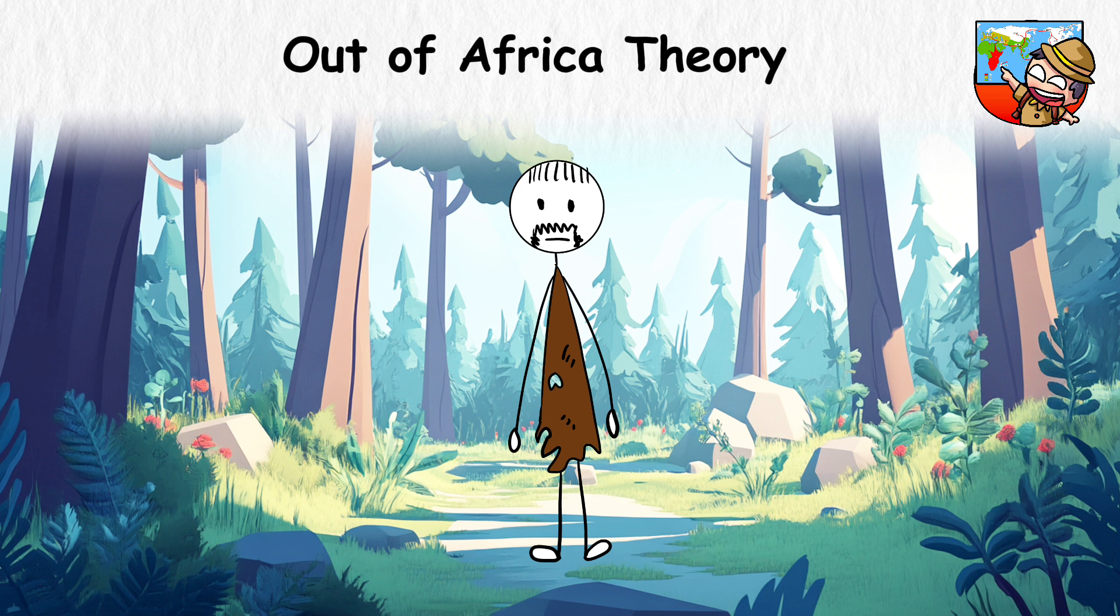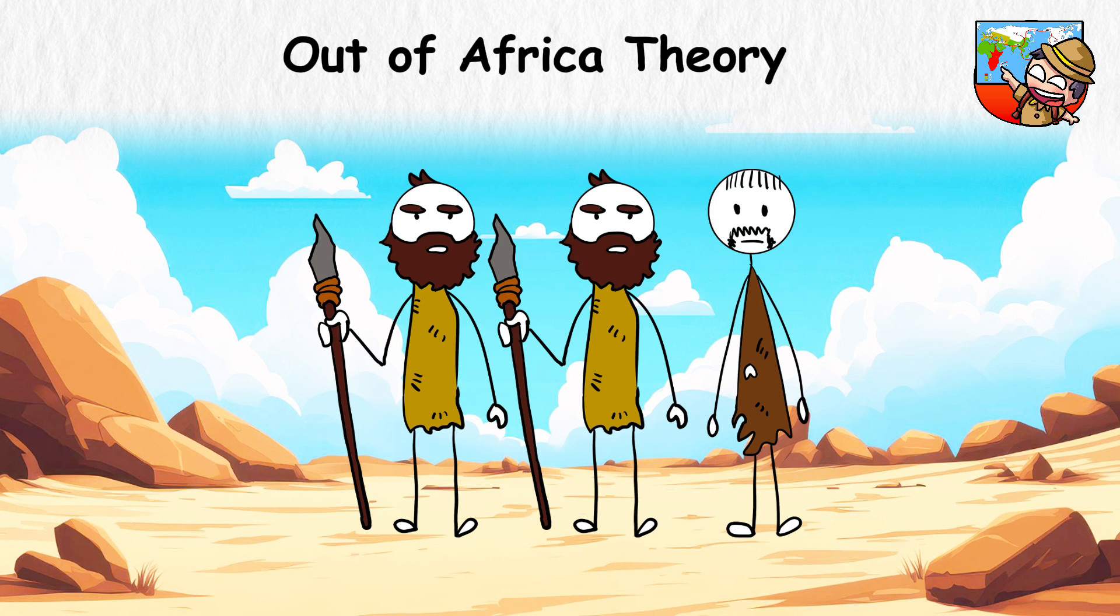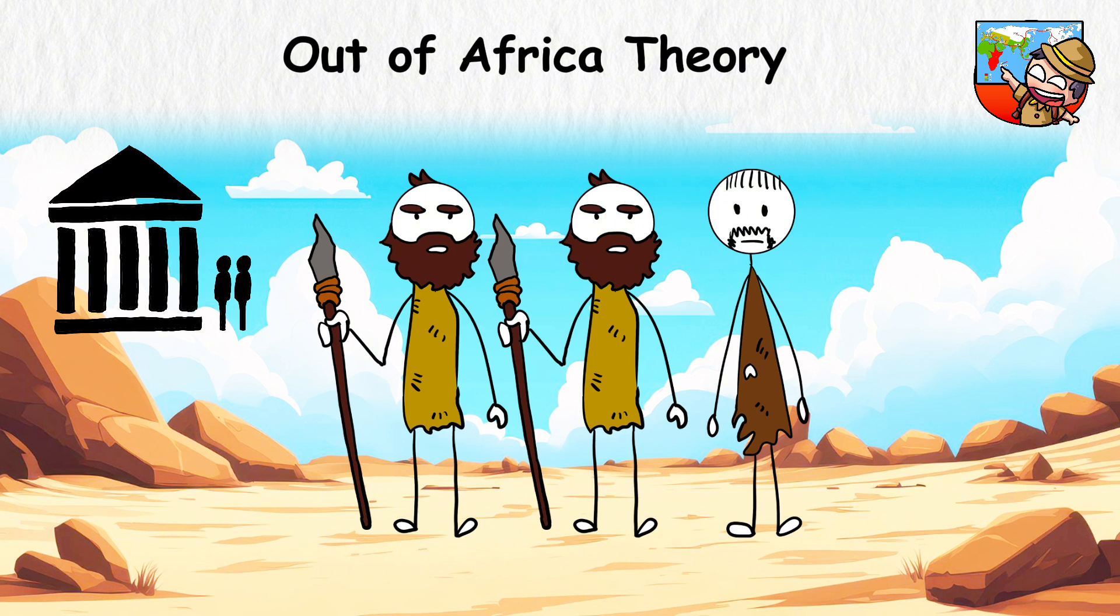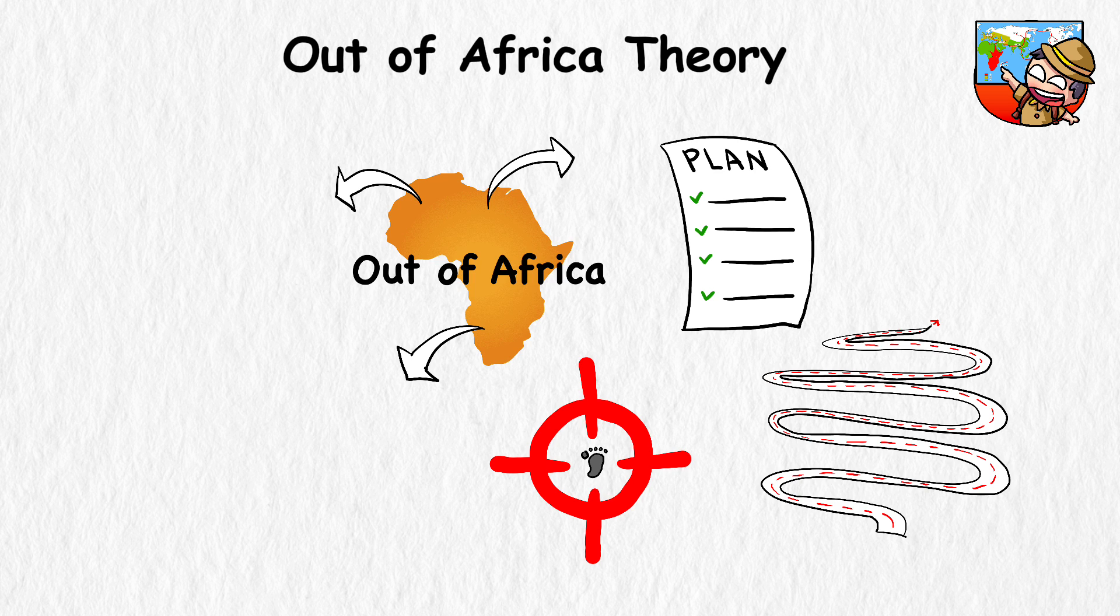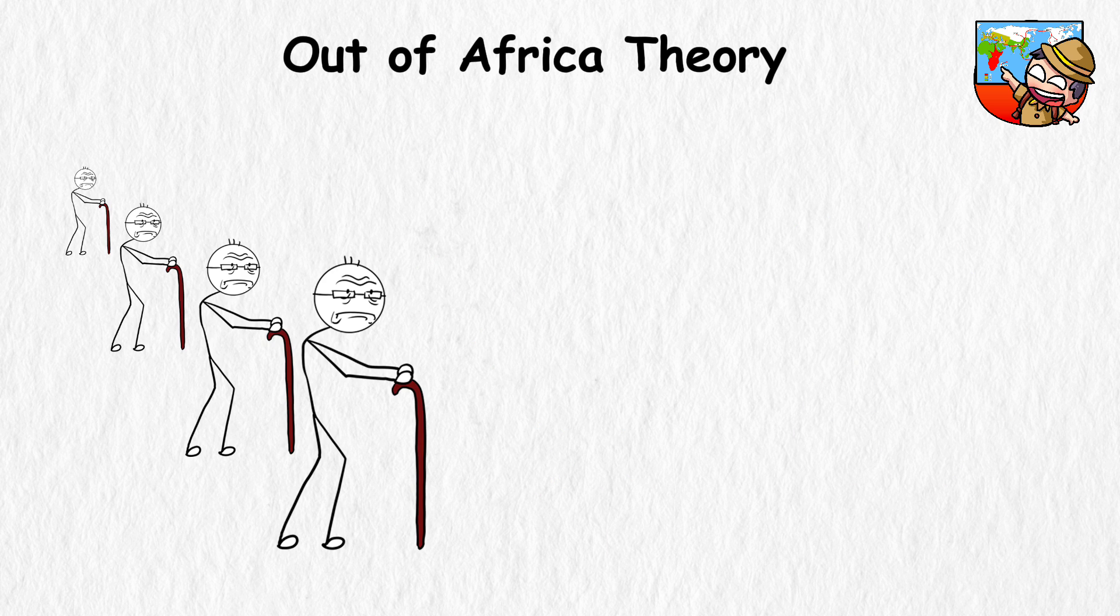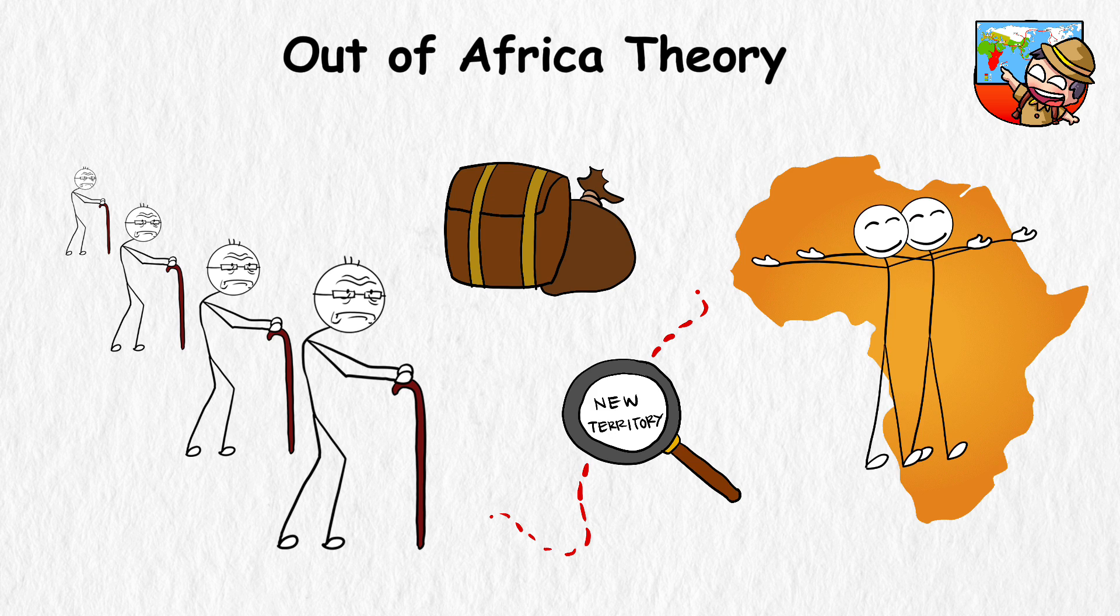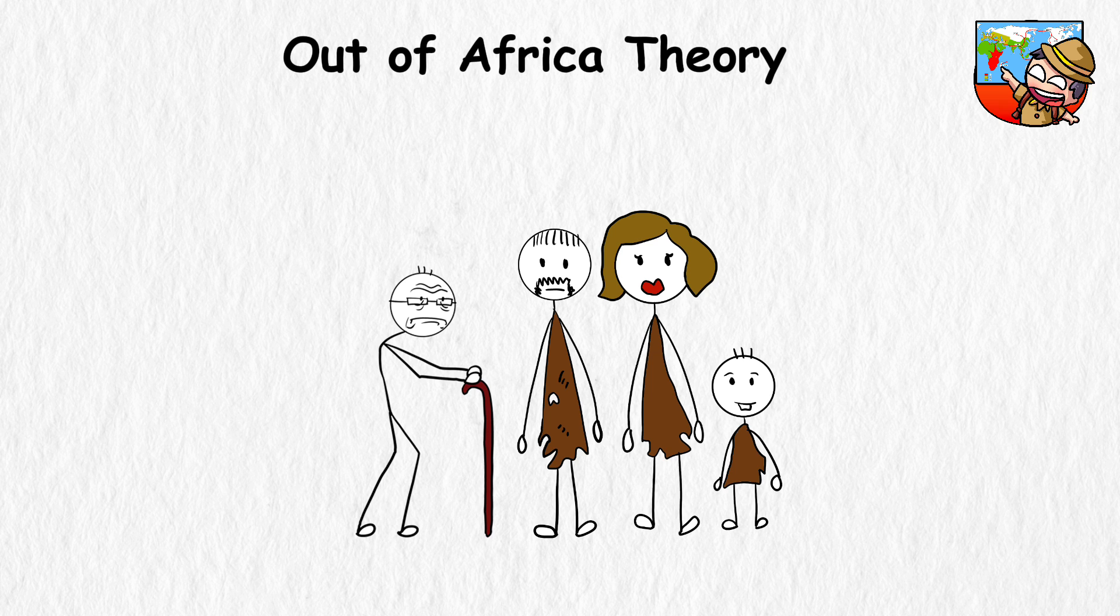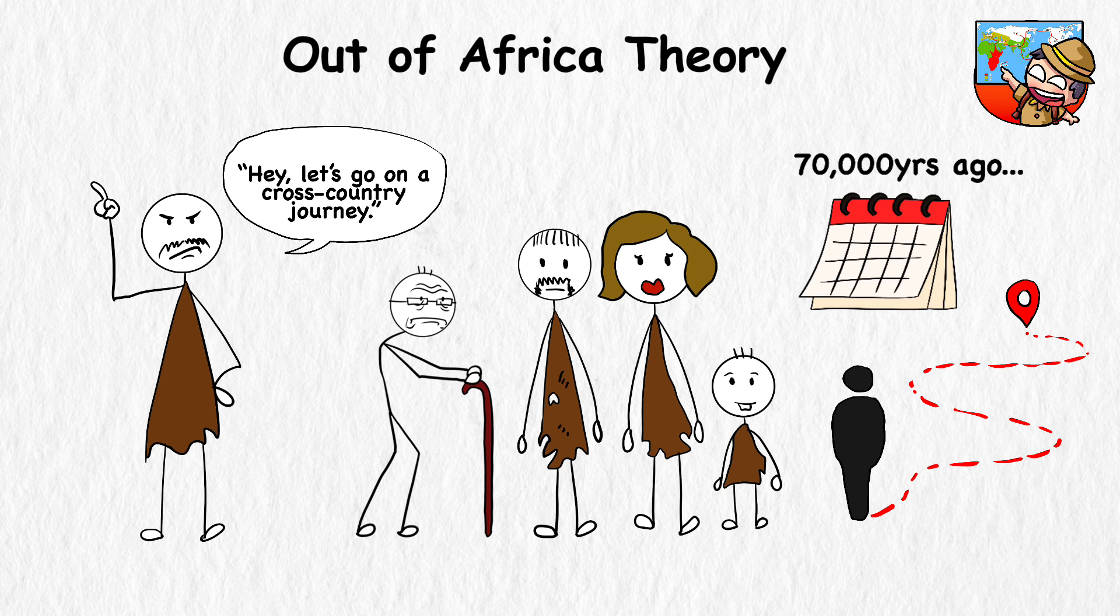Out of Africa Theory. Imagine yourself as an ancient human living in Africa hundreds of thousands of years ago. You and the other Homo sapiens were just hanging out in that region that's essentially called humanity's cradle of civilization. But you planned on going on a really long road trip, and that's where the Out of Africa Theory can be traced. This theory simply suggests that all modern humans have their roots in Africa. Our great-great-great-great and even more great grandparents lived their best lives in Africa before deciding to pack up and explore new territories. Think of it like a massive family reunion in Africa. And then some brave souls said, hey, let's go on a cross-country journey.